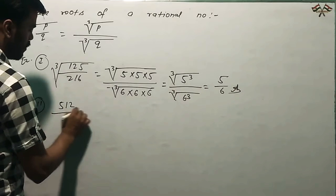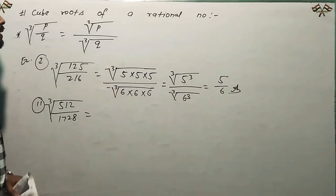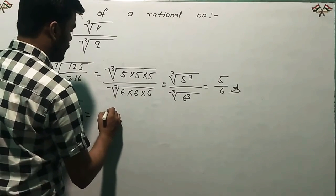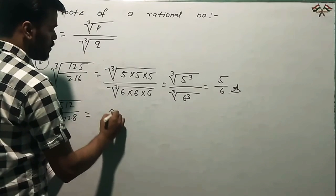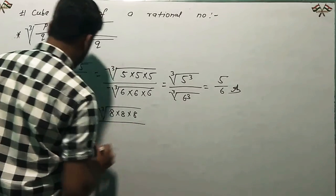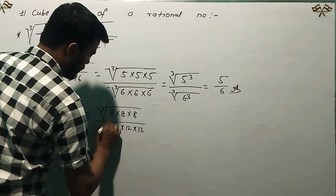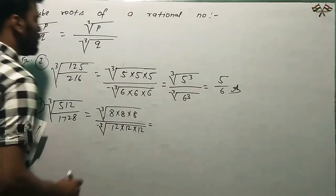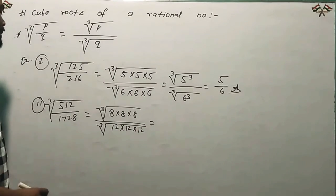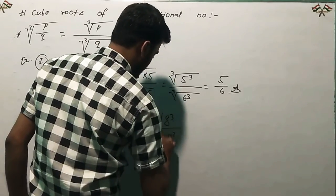Again, take 512 by 728. We need to find the cube root of this number. So we separate the numerator and denominator. 512 is 8 multiply 8 under cube root, and 728 is 12 multiply 12 under roots. This becomes 8 power cube root by 12 power cube root.